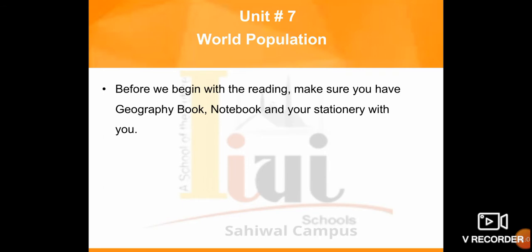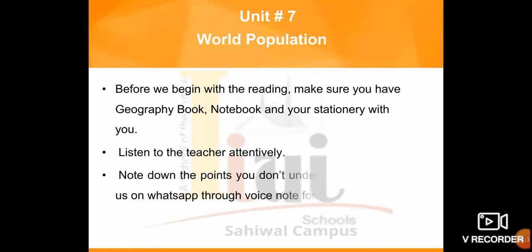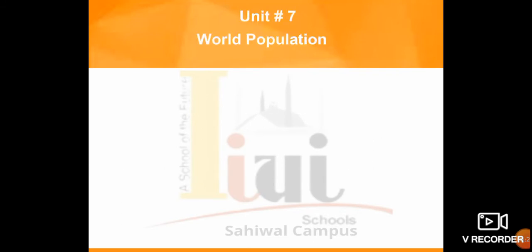Students, before we begin with the reading, make sure you have your geography book, notebook, and stationery with you. Listen to the teacher attentively. Note down points you don't understand and contact us on WhatsApp — throw a voice note for any query. Now open book page number 91. The topic is Movement of Population.